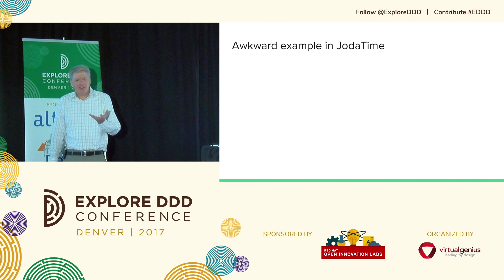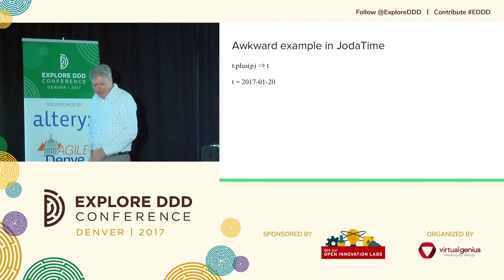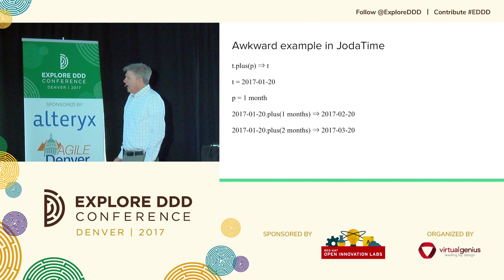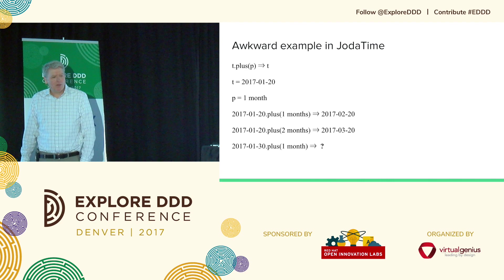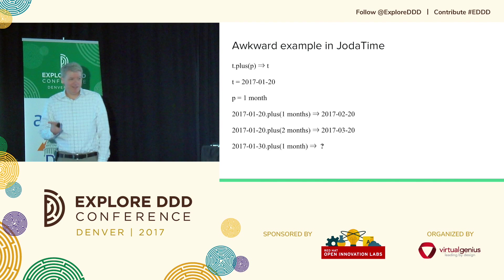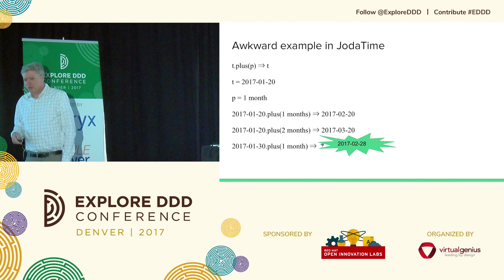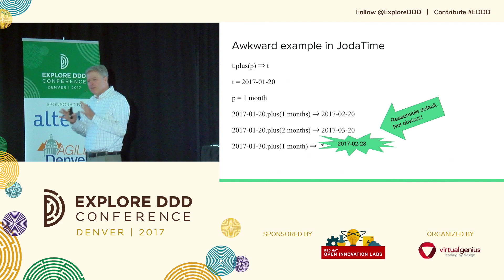Let's try to find an awkward example in JodaTime. Plus is a nice operator — you take a time, plus a period, you get a time. So if you've got 2017-01-20 and add a month, you get 2017-02-20. If you add two months, you get 2017-03-20. But what if you take January 30th and add one month? What do you think you'd get? You might get March 2nd. What you actually get in JodaTime is February 28th. I think that's a reasonable default behavior, but it is not obvious. This is definitely an awkward spot in their model.